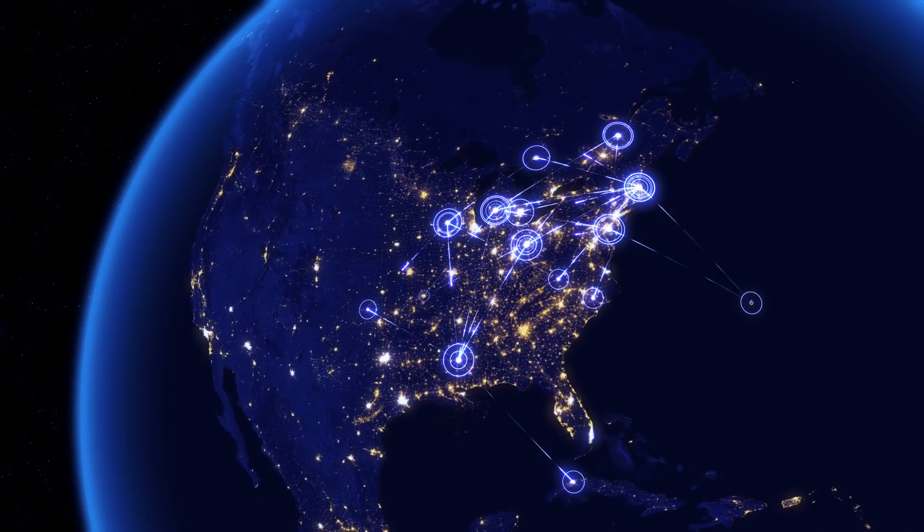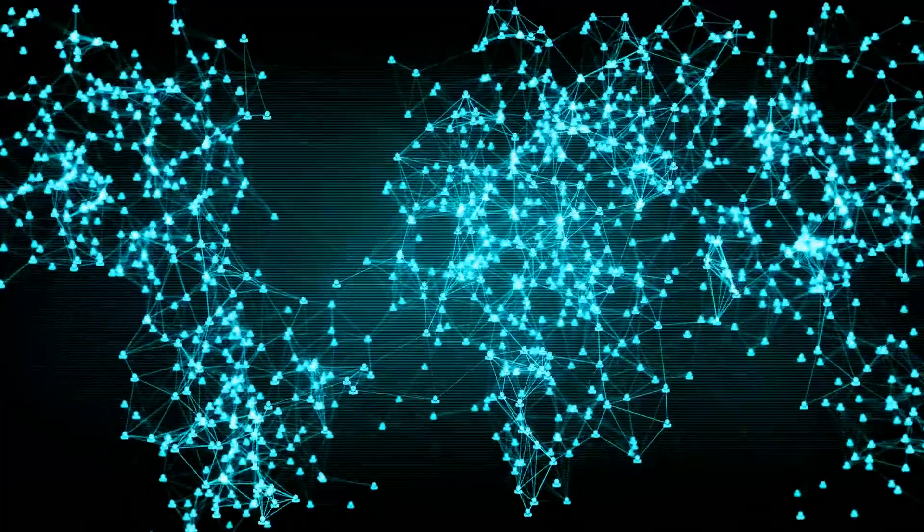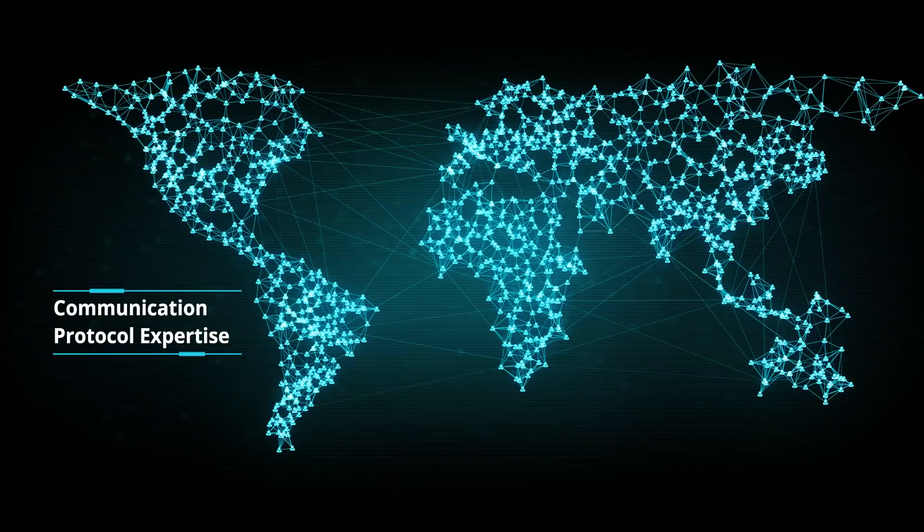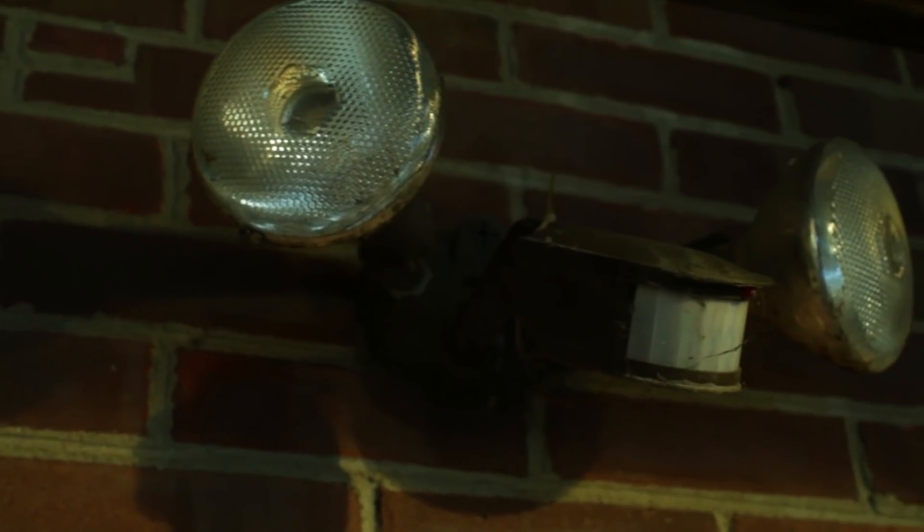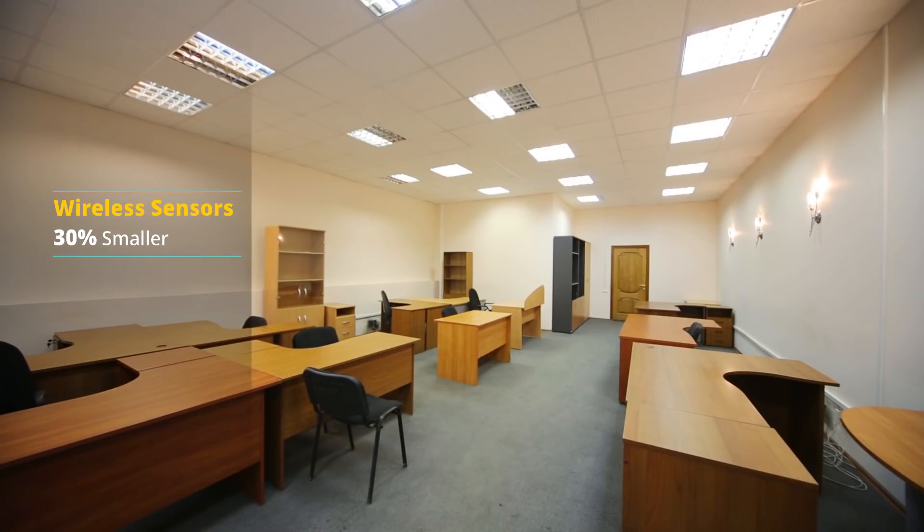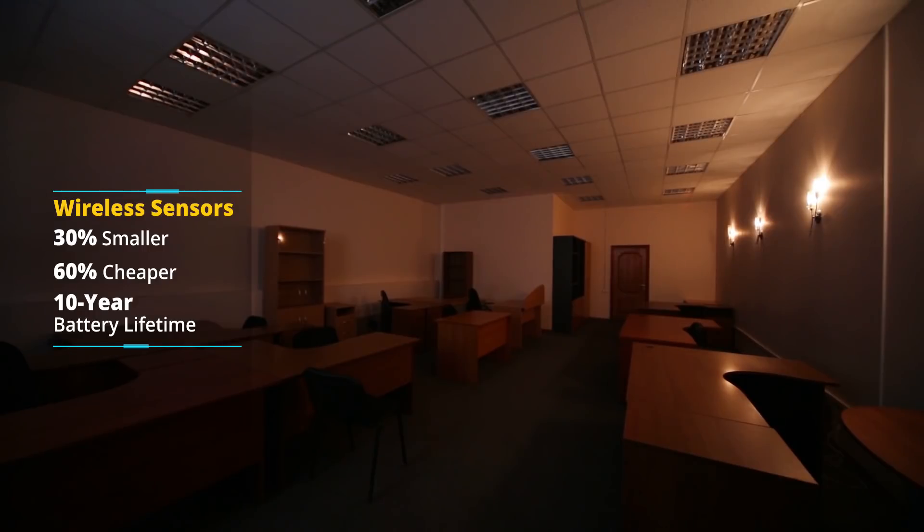Building on our competency in wireless communication, L&T Technology Services is helping global lighting manufacturers roll out the next generation's wireless lighting solutions. Our engineers redesigned a wireless occupancy sensor, making it 30% smaller, 60% cheaper, and boosting its battery life to 10 years.